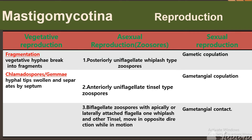Vegetative reproduction also occurs by chlamydospores. The hyphal tip swells and is separated by a septum. After separation, these act as chlamydospores, which then germinate to form a mycelium. Asexual reproduction occurs by zoospores, which we have already discussed, and this is a general feature among members of Mastigomycotina.